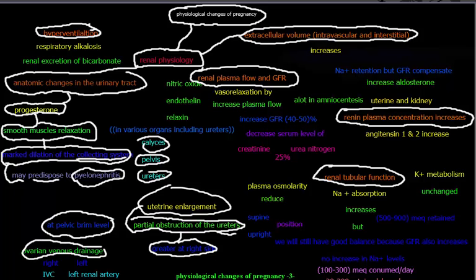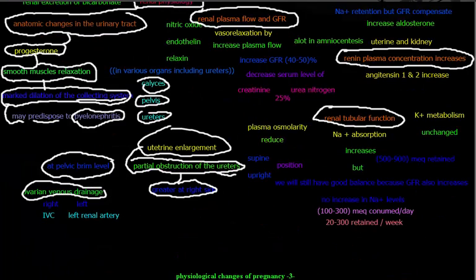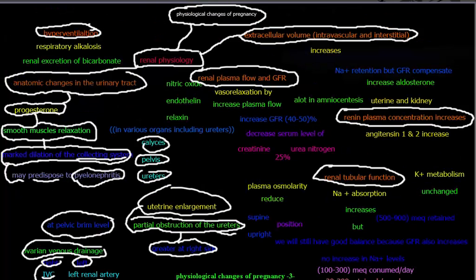To review ovarian venous drainage: the right ovarian vein drains into the inferior vena cava, and the left drains into the left renal vein. The right ureter is obstructed more than the left by uterine enlargement. In summary, the two anatomical changes are: first, progesterone-induced smooth muscle relaxation leading to dilation of the urinary tract, and second, uterine enlargement causing partial obstruction of the ureters.